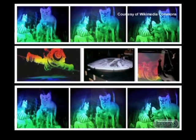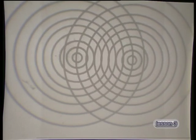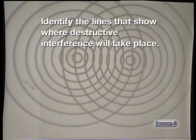Diffraction gratings are also used for making holographic images — images which appear to be three-dimensional when we look at them from different angles. For your task today, let's recall the interference pattern formed by two coherent sources of water waves. Your task is to represent these water waves using a diagram where you show the wave fronts from each source radiating outwards. You will need to do a careful construction so that the wavelength of the waves is consistent between the different wave fronts. Then, on your diagram, try to identify the nodal lines which show us the regions of constructive interference, and also identify the lines that show where destructive interference will take place.